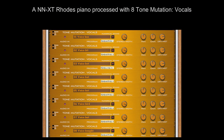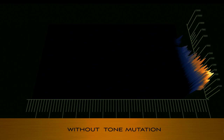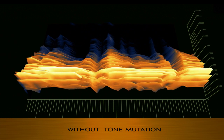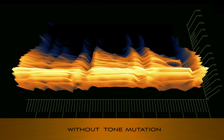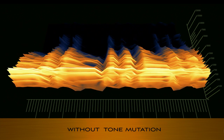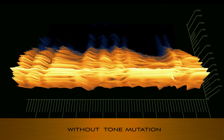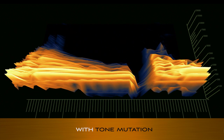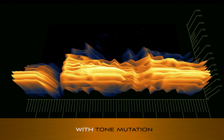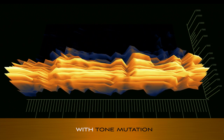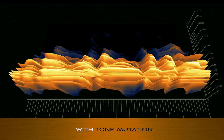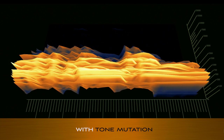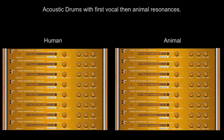An NNXT Rhodes piano processed with eight Tone Mutation Vocals. Acoustic drums are demonstrated first with vocal resonances, then with animal resonances.